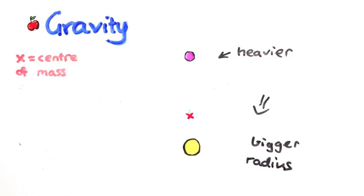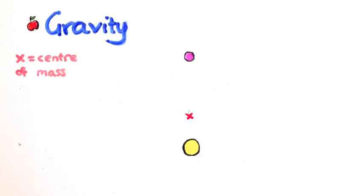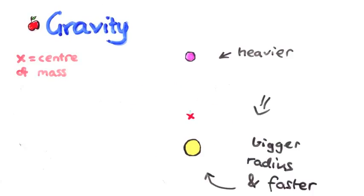Another way to think of this is, the radius is bigger, but it still takes the same amount of time to complete an orbit, so the star must be going faster.